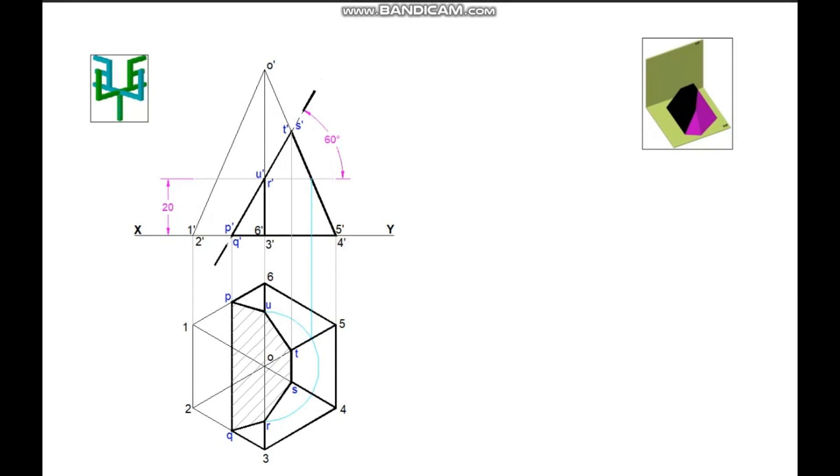For drawing development, true length of slant edge is to be determined. Draw a horizontal line from the apex. From the apex point to any one base corner as radius, cut an arc. Project this point to the elevation. Join this point to O', the apex point of elevation. This line gives the true length. To get true lengths of points on the cutting plane, project those points to the true length line.